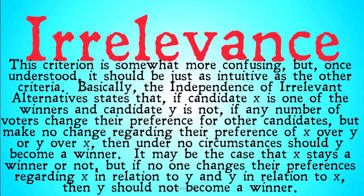Basically, the Independence of Irrelevant Alternatives states that if candidate X is one of the winners and candidate Y is not, if any number of voters change their preference for other candidates — not for X over Y or Y over X — but make no change regarding their preference of X over Y or Y over X, then under no circumstances should Y become a winner.